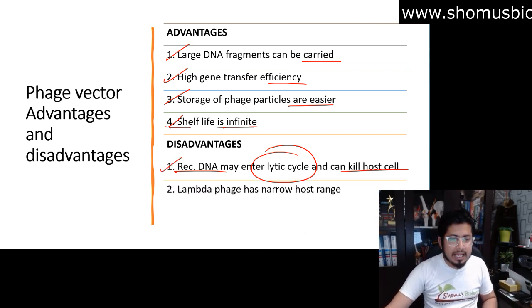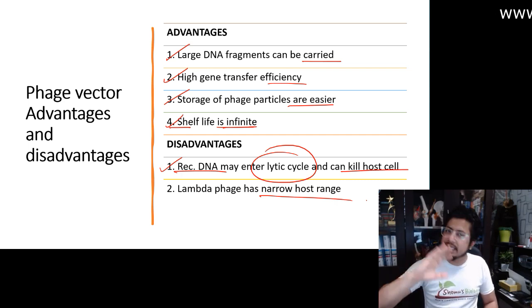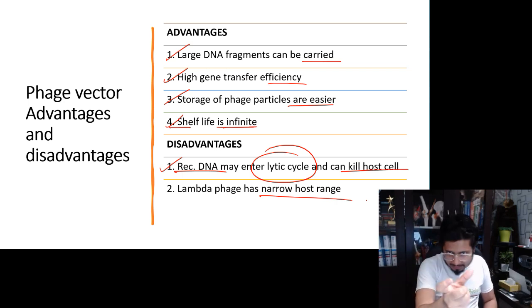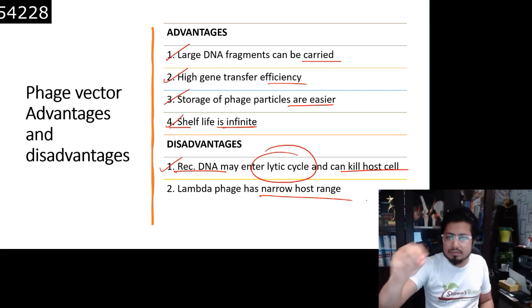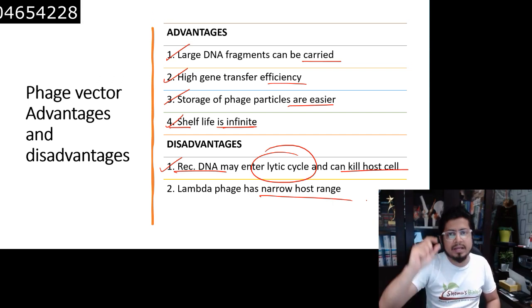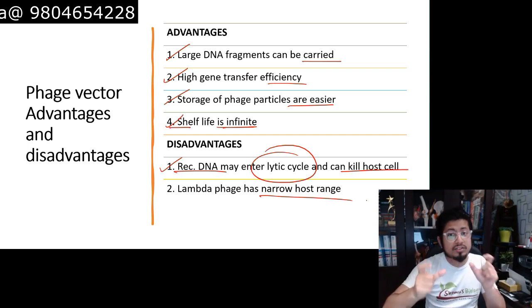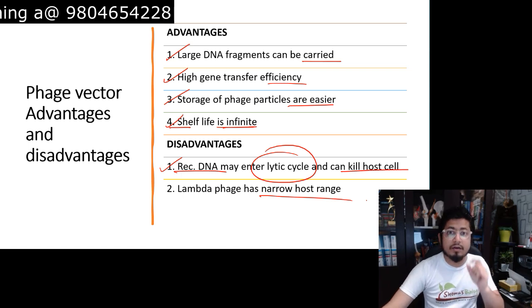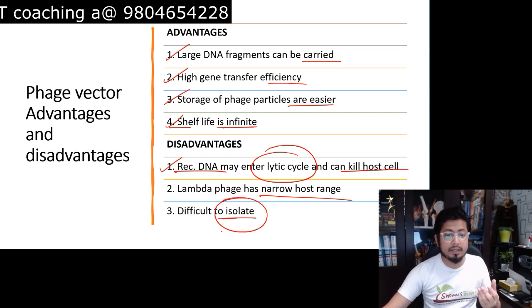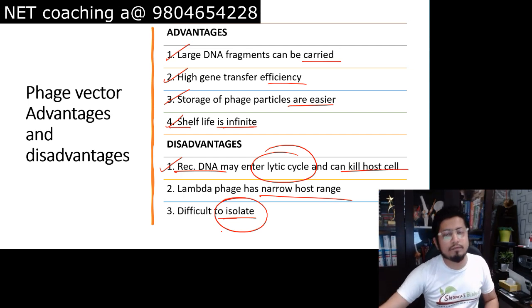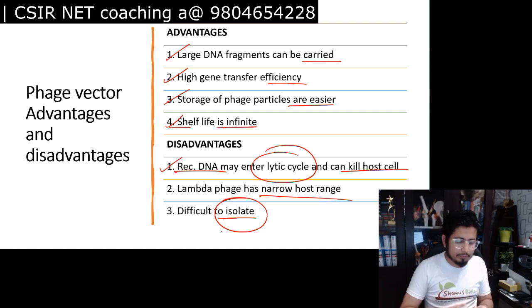The second disadvantage is the narrow host range — the bacteriophage cannot be used to transfer a gene into a distantly related organism. For example, lambda phage infects E. coli naturally, so we can use lambda phage to infect E. coli as a host cell, but we cannot use that same lambda phage for another bacterium or another host. Host range specificity is a limitation. The third disadvantage is difficulty of isolation, because the isolation protocol of a virus and viral culture is completely different from that of bacterial culture.